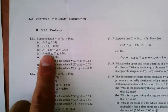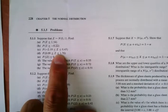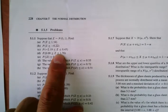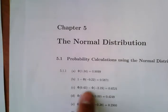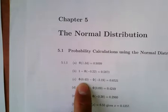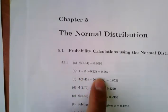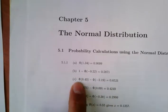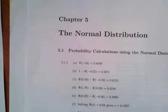For the next question we have an interval, so we can do a subtraction. The interval is from -0.219 to 0.43, so we compute phi of 0.43 minus phi of negative 0.219. We get each value from the table and subtract to get the interval probability.